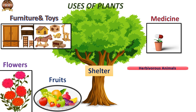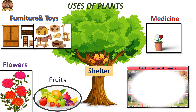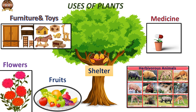Trees are the shelter for many birds and they give shade for animals too. Many animals eat grass and leaves and they live on plant sources. Those are called herbivorous animals. As we can see in the picture, they are eating grass and leaves.